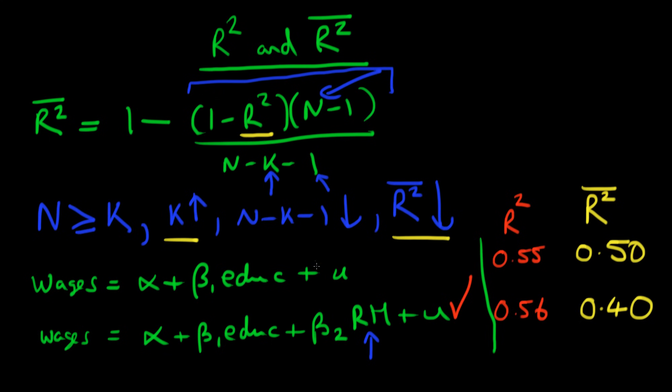This is reflecting the fact that even though I've increased my number of regressors, I've increased K, R-squared hasn't increased significantly, or the ability of my independent regressors to explain my dependent variable hasn't increased significantly. So my R-bar squared, my adjusted R-squared, will actually fall. It will reflect that.